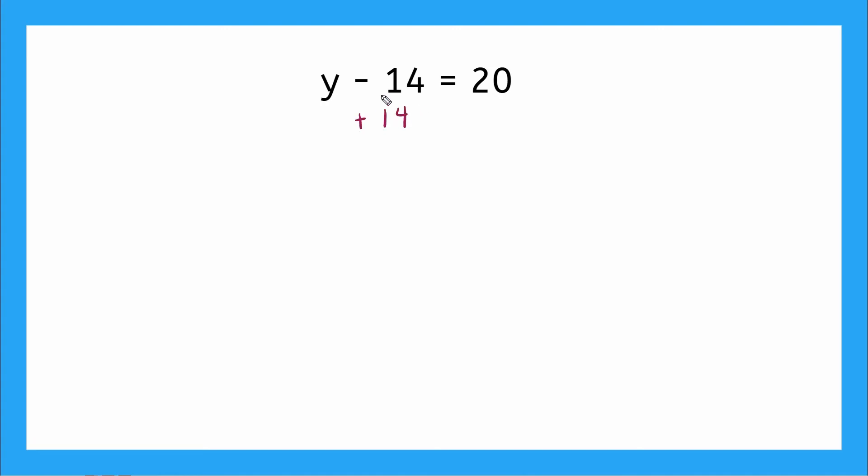And if I add 14 to the left side, I need to add 14 to the right side. And now minus 14 plus 14, that gives me zero. I have y all by itself. 20 plus 14, that's equal to 34.